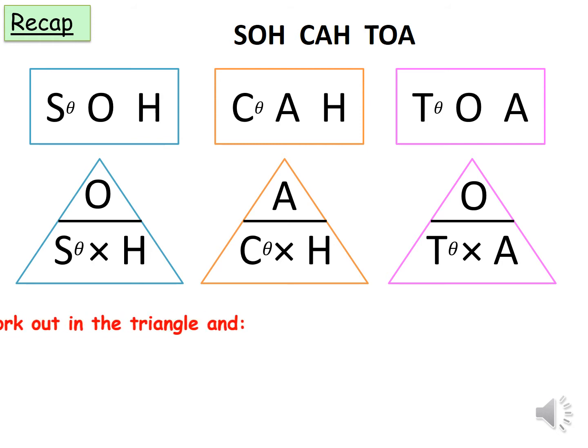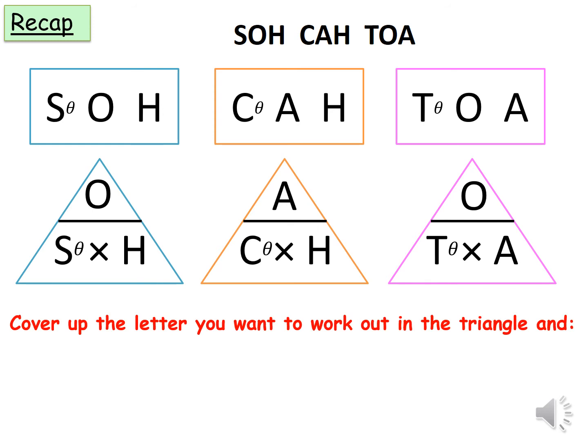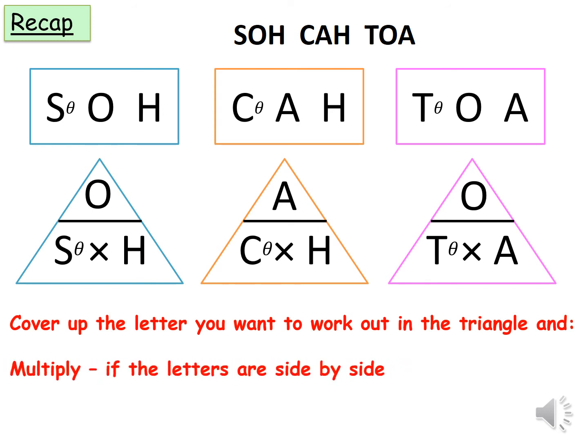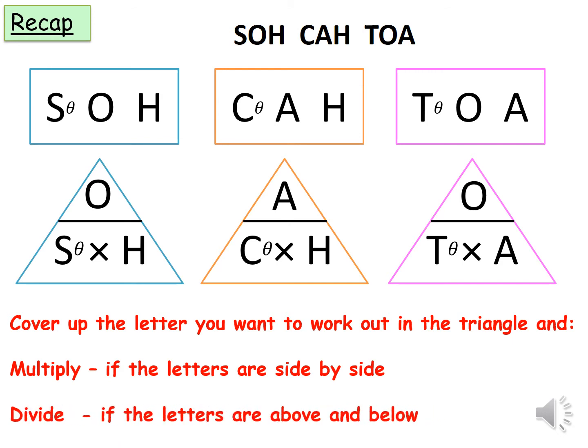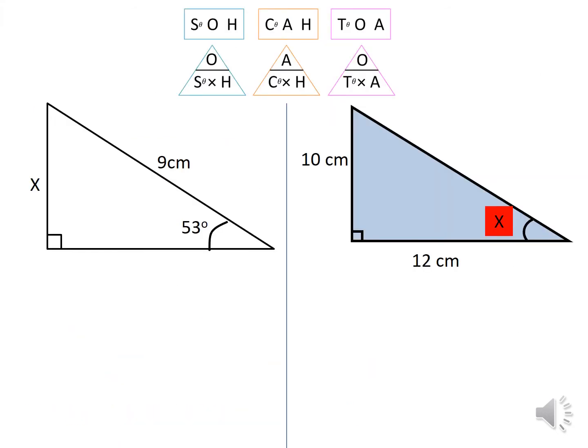Make sure you cover up the one you're looking for, multiply if they are side by side, and divide if one is above the other. This is a quick reminder on how to label right angle triangles to pick the right trigonometry formula, so let's look at the first one on the left.